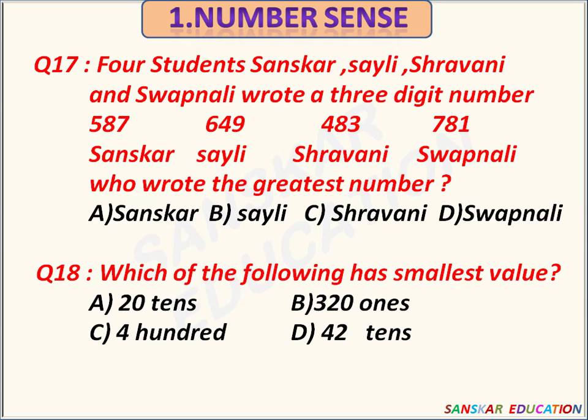Four students — Sanskar, Saili, Sravani, and Sopnali — wrote a three-digit number. Sanskar wrote 587, Saili wrote 649, Sravani wrote 483, and Sopnali wrote 781. Who wrote the greatest number? Options are Sanskar, Saili, Sravani, Sopnali. Sopnali wrote the greatest number, 781.